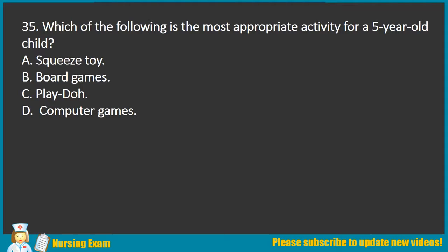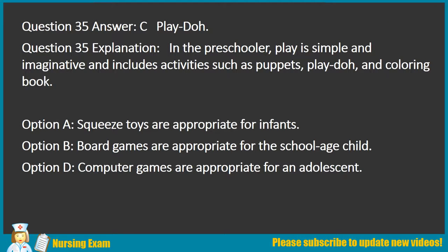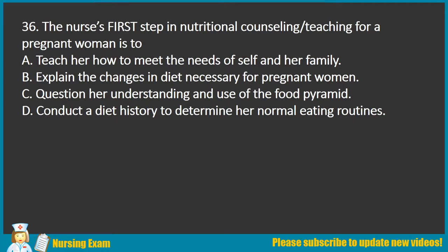Question 35. Which of the following is the most appropriate activity for a 5-year-old child? A. Squeeze toy. B. Board games. C. Play-Doh. D. Computer games. Answer: C. Play-Doh. Explanation: In the preschooler, play is simple and imaginative and includes activities such as puppets, Play-Doh, and coloring books. Squeeze toys are appropriate for infants. Board games are appropriate for the school-age child. Computer games are appropriate for an adolescent.